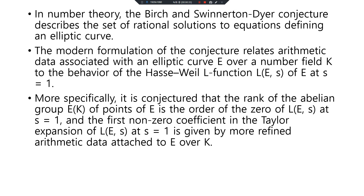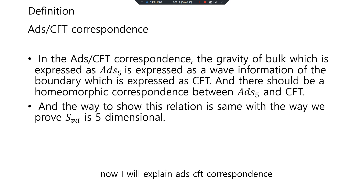More specifically, this conjecture states that the rank of the abelian group E(K) of points of E is the order of the zero of L at s equals 1, and the first non-zero coefficient in the Taylor expansion of L at s equals 1 is given by more refined arithmetic data attached to E over K.